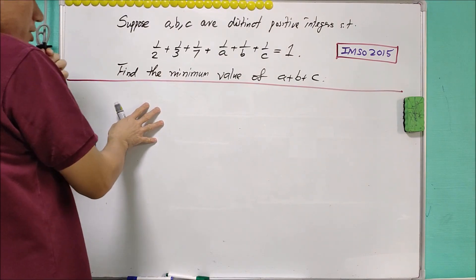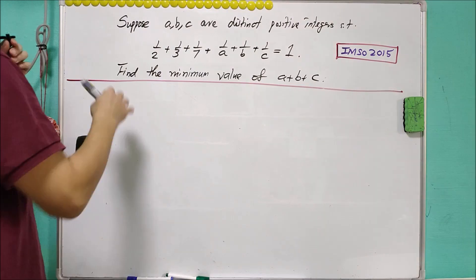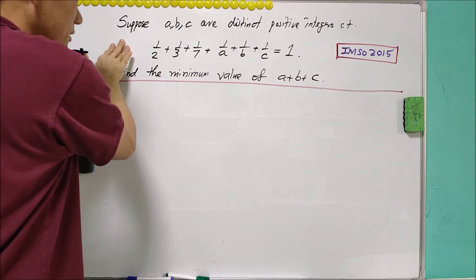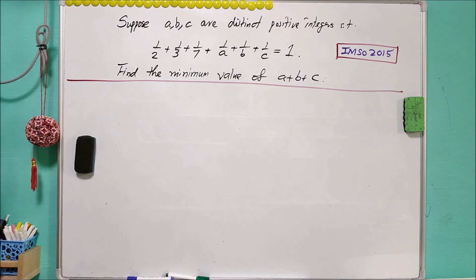This is another interesting and challenging question from IMSO2015. Suppose A, B, C are distinct positive integers that satisfy this equation. You also find the minimum value of A plus B plus C.